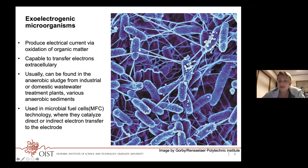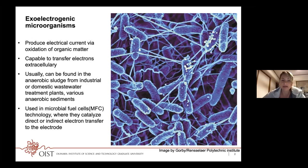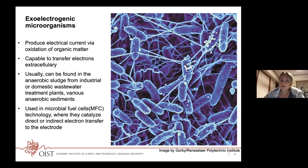Where can we find these exo-electrogenic bacteria? Actually in many different environments — for example, anaerobic sludge from industrial or domestic wastewater treatment, or other anaerobic sediments like lakes. These bacteria have found very relevant usage in modern anaerobic technology for electricity production, called microbial fuel cells.